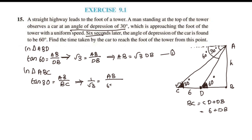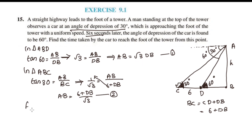We know that BC is 6 plus DB. So AB by root 3 equals 6 plus DB divided by root 3, giving us AB equals 6 plus DB divided by root 3. This is equation 2. From equations 1 and 2, root 3 times DB is equal to 6 plus DB divided by root 3.